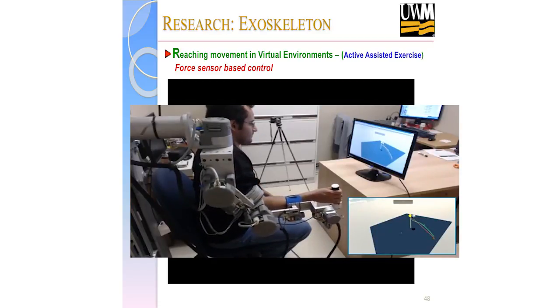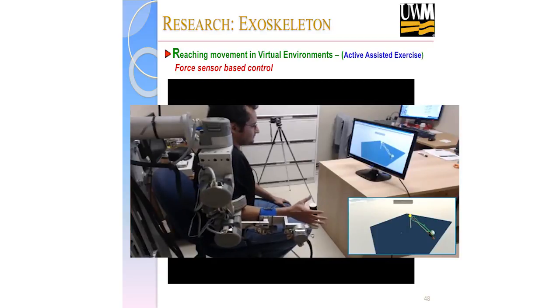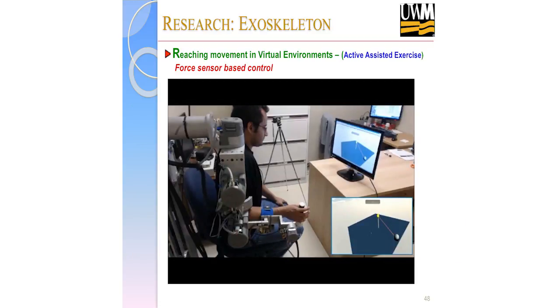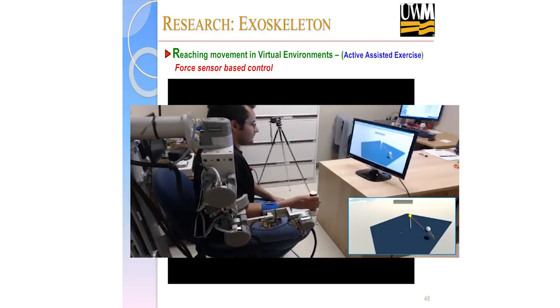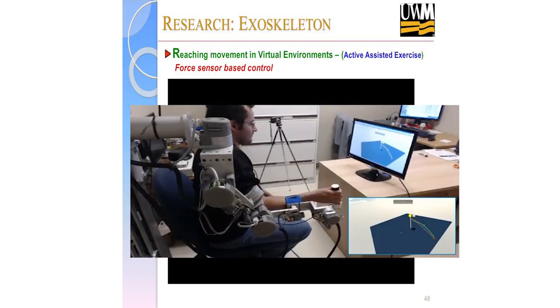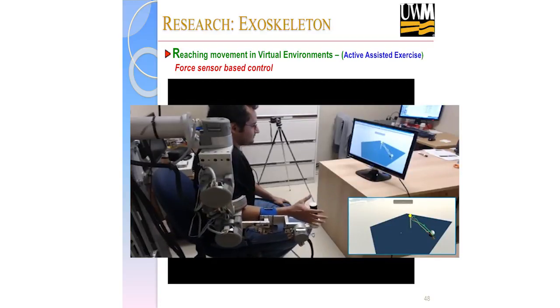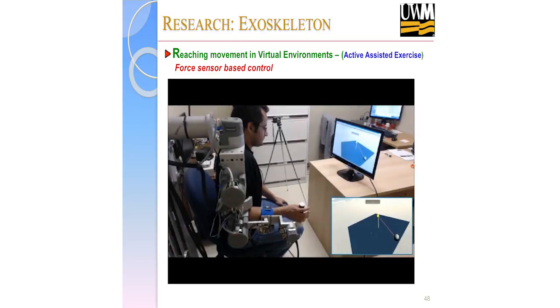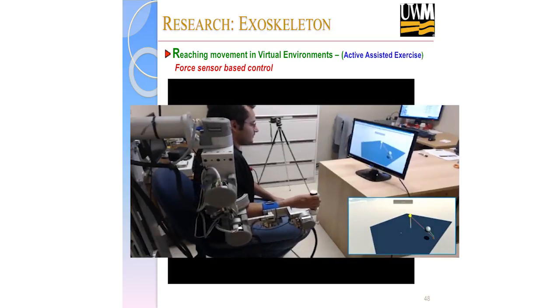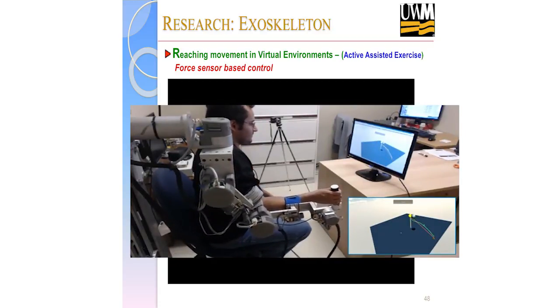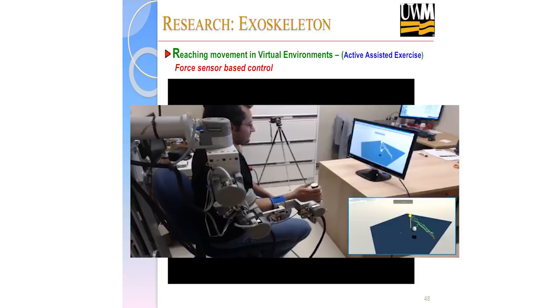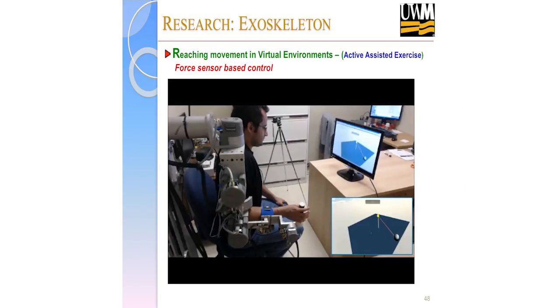This is active-assisted exercise. We give the patient a task to reach a dot target. In the path, if the patient fails to move, the robot will help push toward the goal. Once the patient is active, the robot is passive; once the patient cannot move, the robot helps guide them to the target. When the patient releases his hand, the robot knows the target and pushes him there. This intelligence is built into the system.